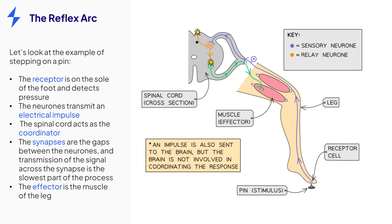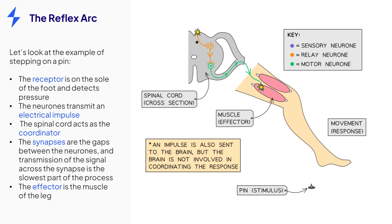The motor neuron is the final neuron in the arc and sends the impulse to the effector, which in this case is the muscle of the leg, which contracts and brings about the response of moving the foot away from the pin.